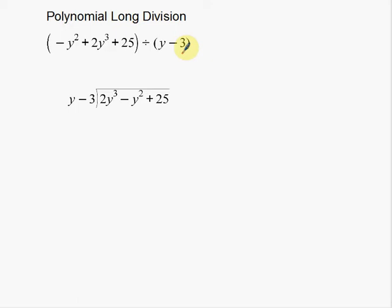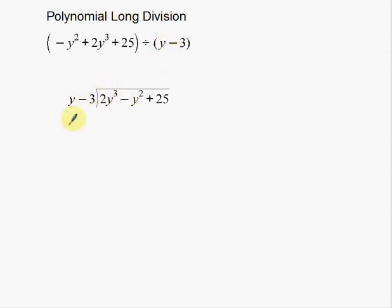What we want to do is rewrite it just like you would for regular long division. The polynomial being divided is the dividend, and what we're dividing by is the divisor, which goes on the outside of the house. Make sure your polynomial is in standard form — higher powers first. So 2y³ comes first, then negative y², then 25 last. The setup is the same as elementary school long division.